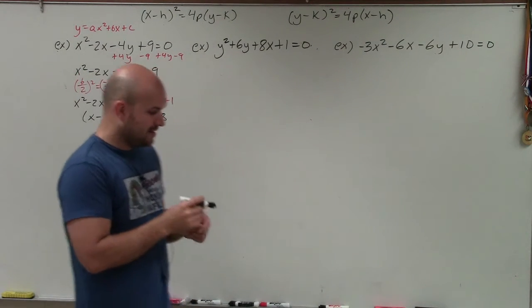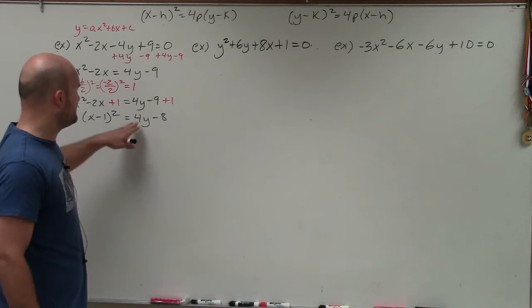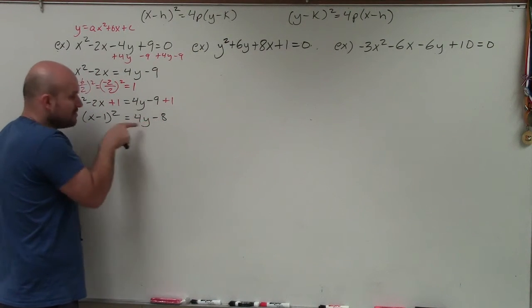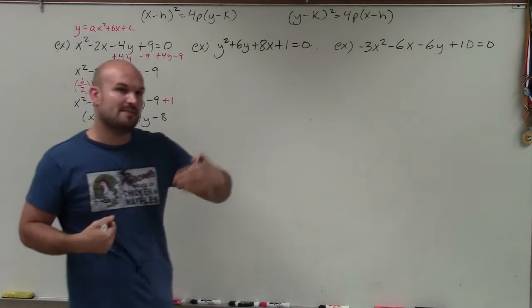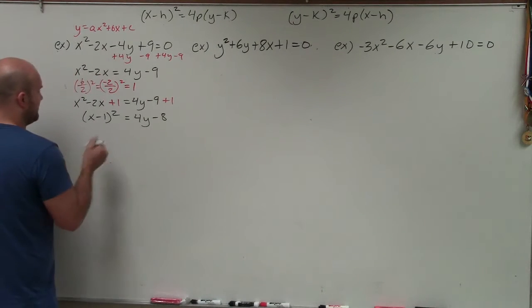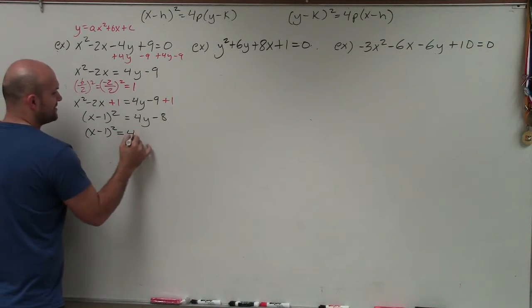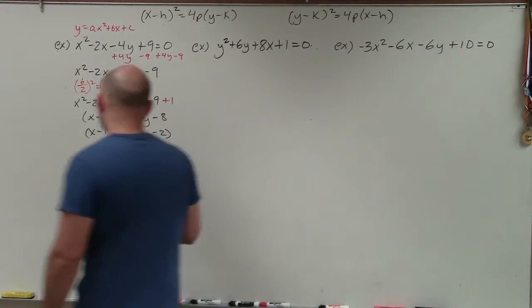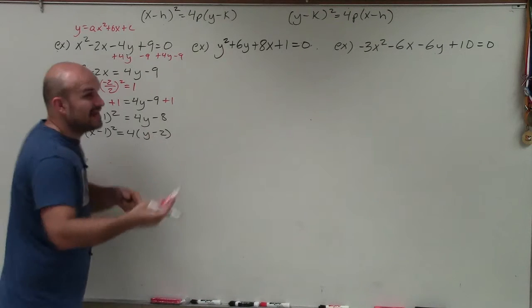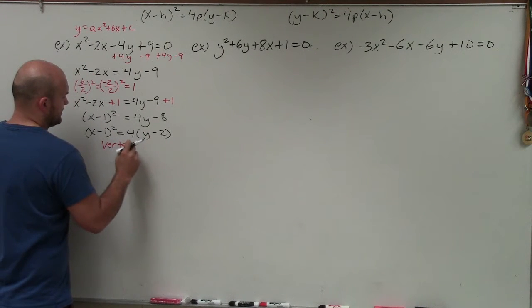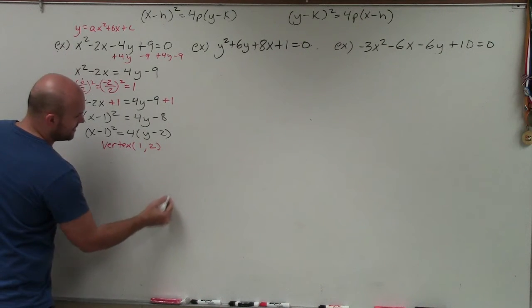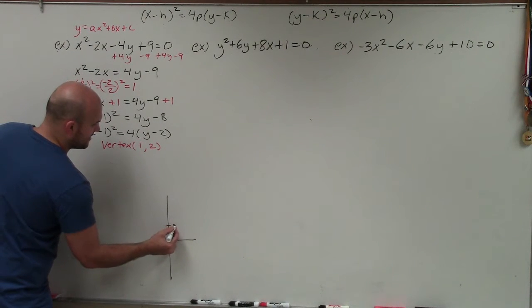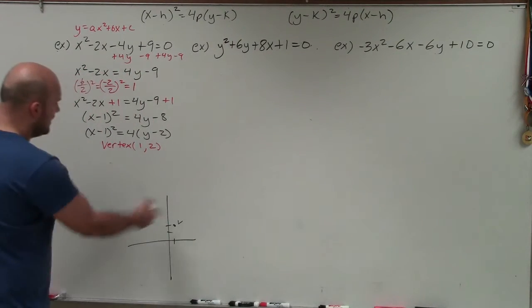Now another issue: to find h and k, we need 4p multiplied by (y − k). Here the 4 is only multiplied by y, not by the whole (y − k). So I need to factor out that 4, which leaves (y − 2). Now I know h and k. Remember, h is always with x and k is always with y, so my vertex is (1, 2). I'll plot that — over 1, up 2 — and label it.